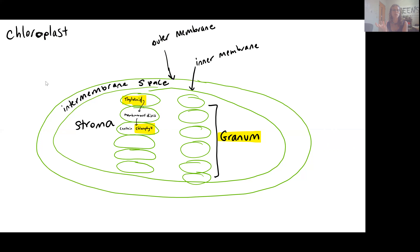Chlorophyll is what actually makes plants green. All of the stacks of thylakoids together are called grana — that's the plural form. One stack, as labeled here, is a granum — that's the singular form.